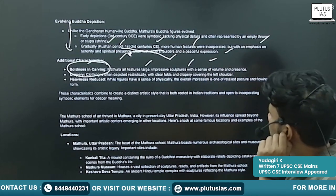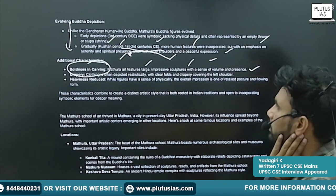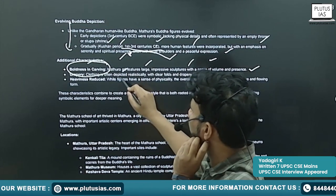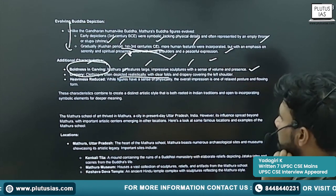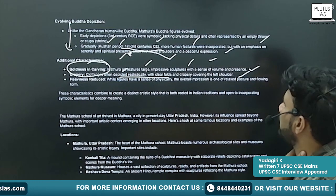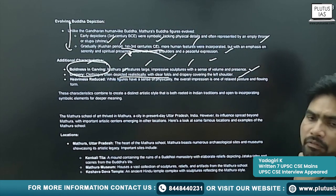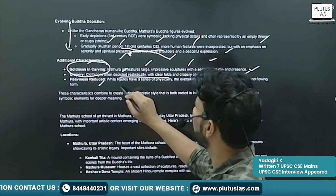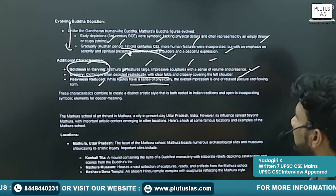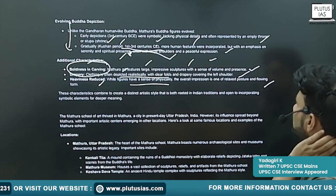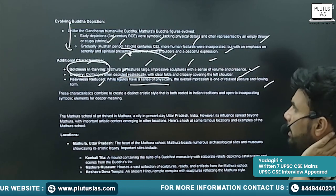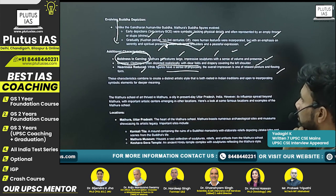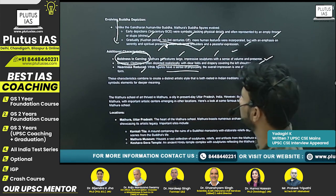Additional characteristics: boldness in carving — it features large, impressive sculptures with a sense of volume and presence. Drapery — clothing is often depicted realistically with clear folds and drapery covering the left shoulder of the sculptures.